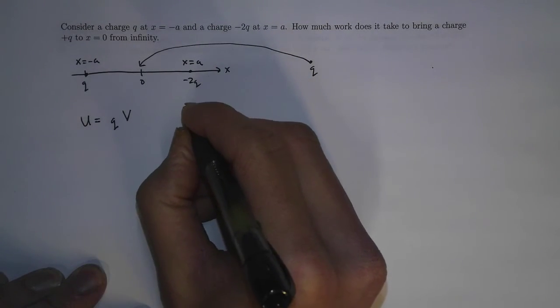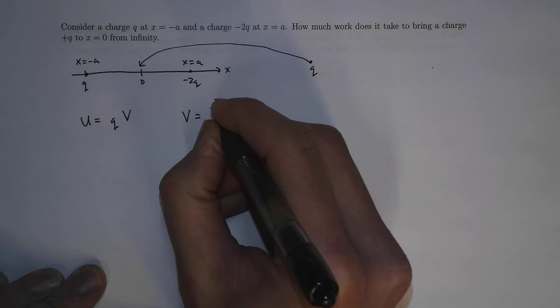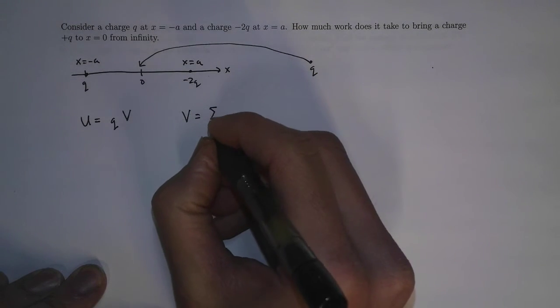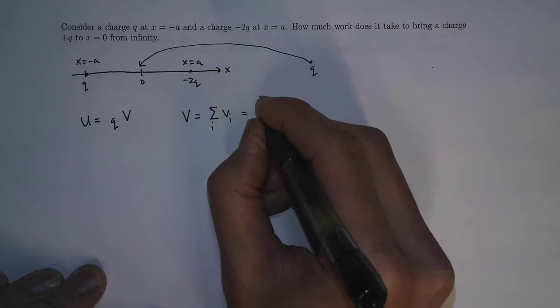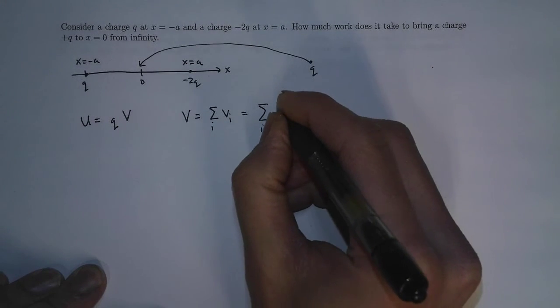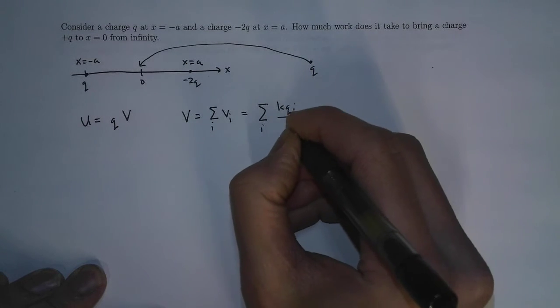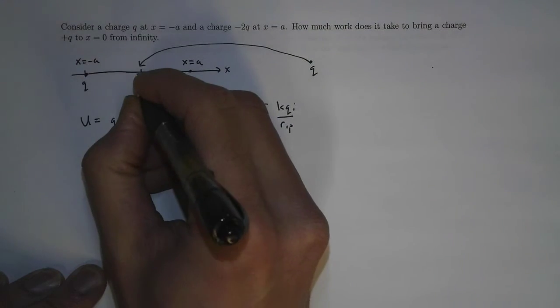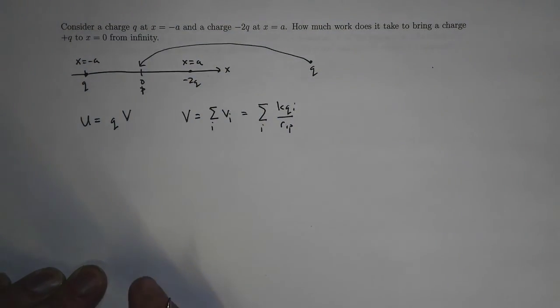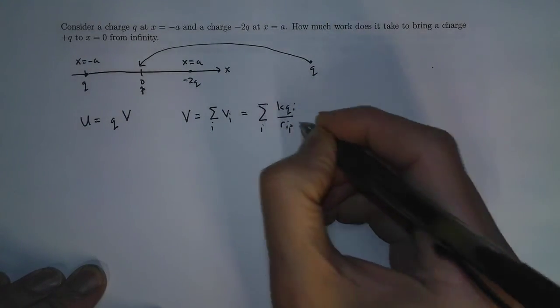So we just need to calculate what the potential is. Let's recall the potential. The potential is equal to the sum over i of all the little potentials, which equals sum over i of kqi over rip, where this is point p, the position that we care about.